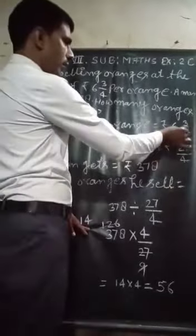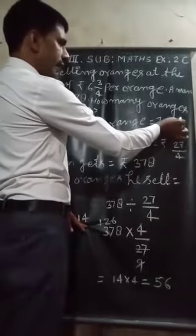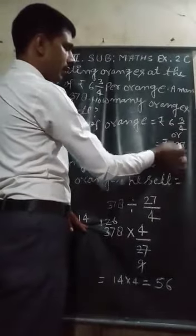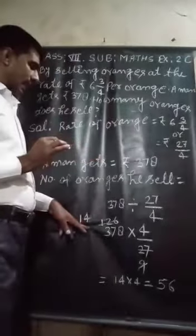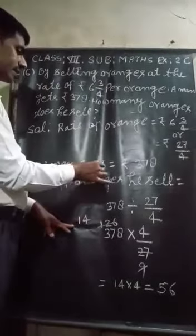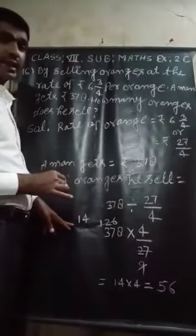Or, 4 times 6 is 24, and 3, 27 upon 4 rupees. Then, a man gets Rs. 378.